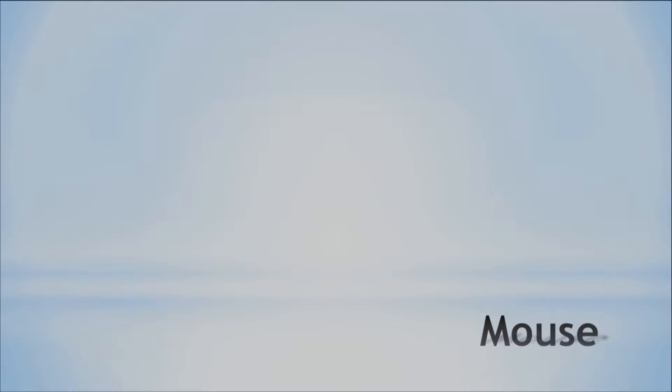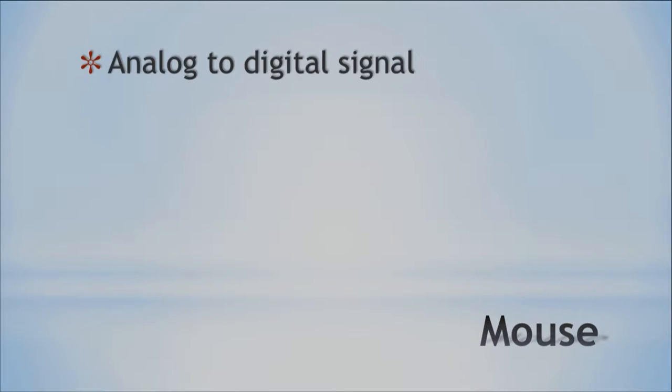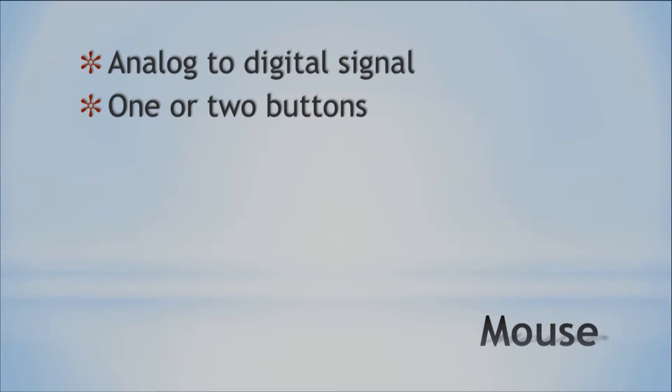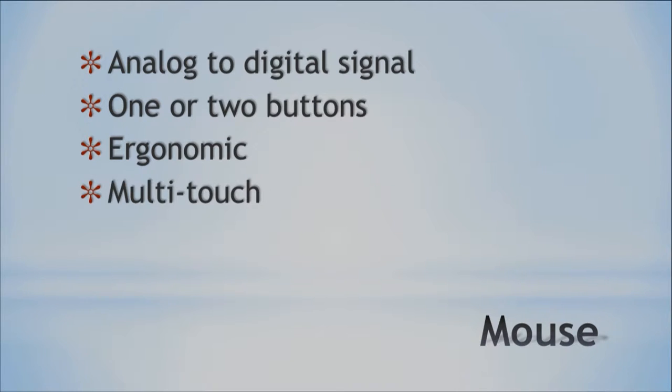Next, we have the mouse, and most of you are pretty familiar with this. Keep in mind that it transforms the signal from analog — like when you're moving it around in curves — into a digital signal that your computer can recognize. It may have one or two buttons. If you think of a one-button mouse, you probably think of an Apple mouse; for two buttons, we usually think of a PC. For better comfort, you'll want an ergonomic mouse. Ergonomic means it's built to fit your anatomy, namely your hands, so it won't hurt you even with extended use — though don't overuse it anyway.